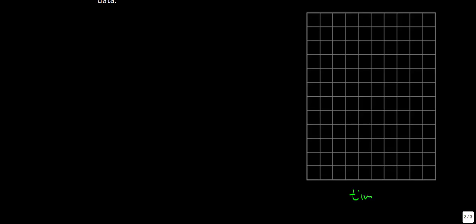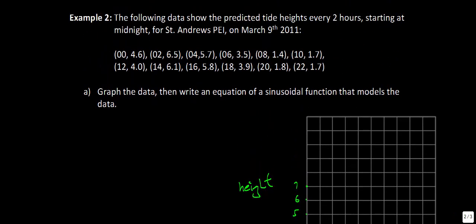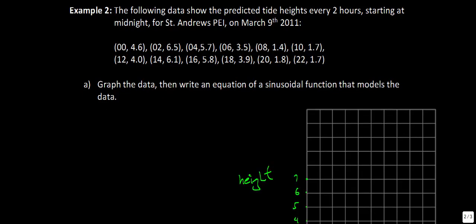I label the horizontal axis for time: 0, 2, 4, 6, 8, 10, 12, 14, 16, 18, 20, 22. The vertical axis represents height in meters, going up in increments of 1 from 0 to about 7, since our maximum height is around 6 and a bit. Now we're ready to plot all the data points on the graph.